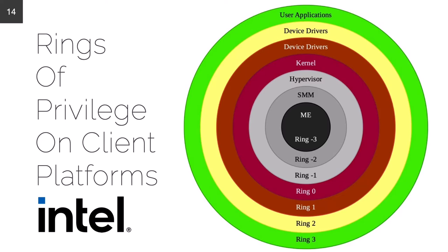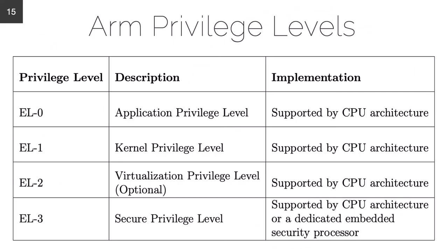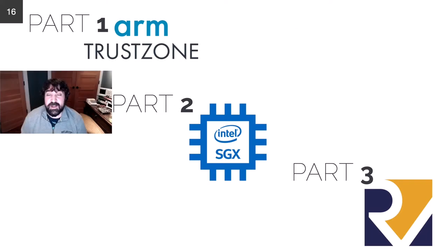It's important to note that ARM privilege levels are slightly different from the x86 world — somewhat confusingly, the numbers are reversed. EL0 is the least privileged application level, with EL1 and EL2 becoming progressively more privileged, and EL3 containing the most privileged and most secure code. With that, let's explore the similarities and differences between ARM TrustZone, Intel SGX, and RISC-V physical memory protection.